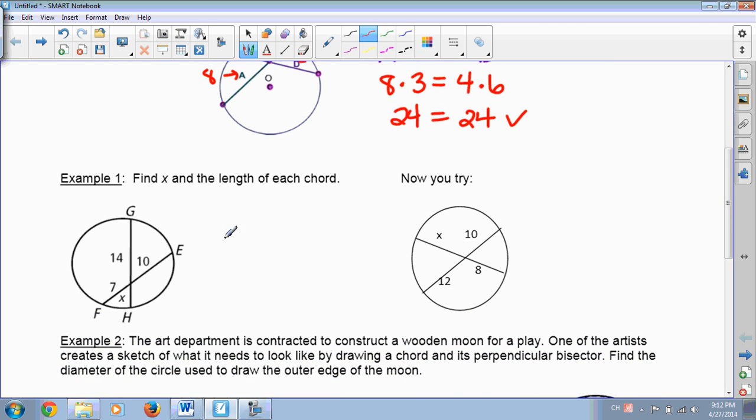Okay, so let's apply that on example number one. Find X and the length of each chord. Well, remember, each segment of each chord times itself would equal the two segments of the other chord. So 7 and 10 are on the same chord, FE. So 7 times 10, that would equal 14 times whatever X is. Okay, and then we can go ahead and solve. 7 times 10 is 70, and 14 times X is 14X, then divided by 14, and X is 5.